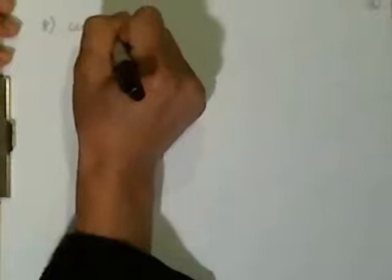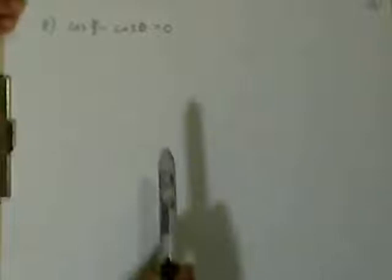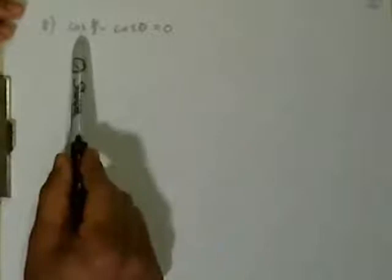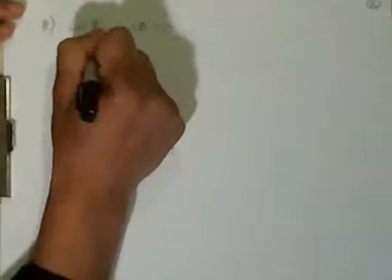Next problem — we're going to do number 8 on page 2. Cosine of theta over 2 minus cosine of theta is equal to 0. Great problem — you've got a half angle there. Remember the formula for the half angle for cosine? Make sure you know it. We're going to substitute the half-angle formula: square root of (1 plus cosine theta) divided by 2, minus cosine theta equals 0.